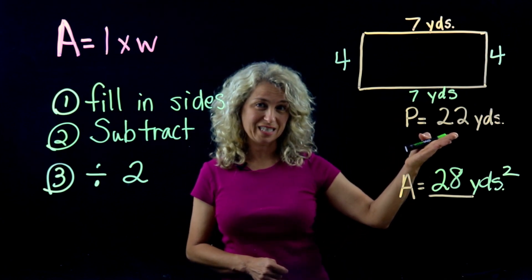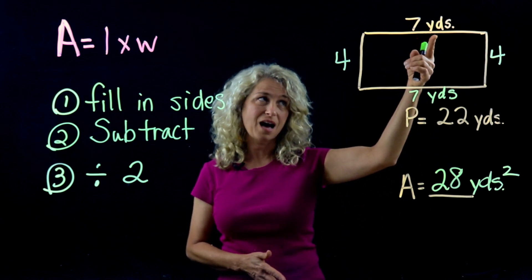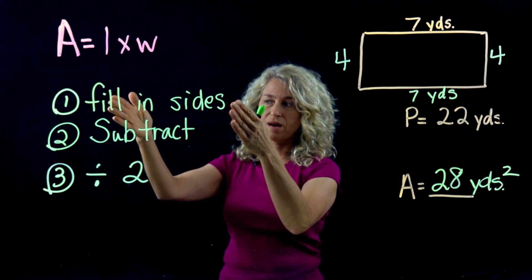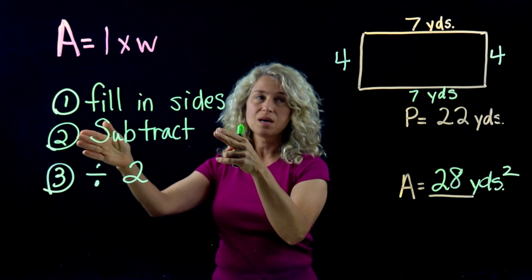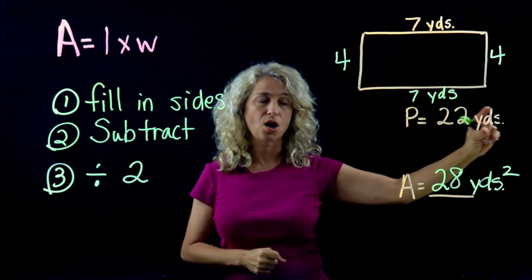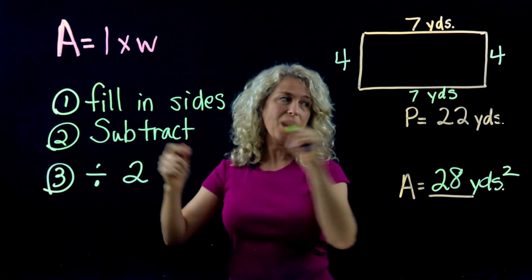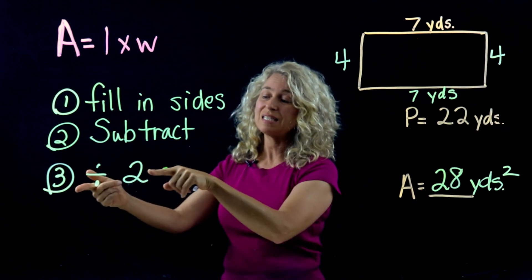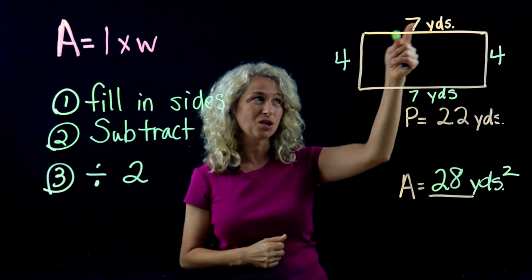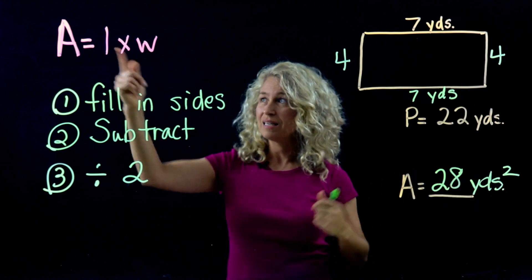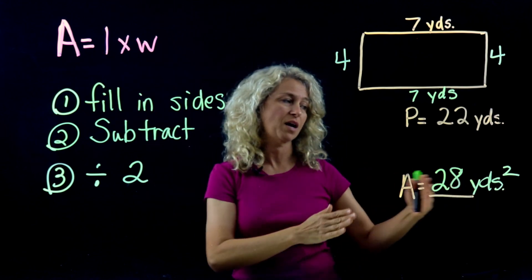And then step 3: divide and you'll get your missing side, and then you can just simply multiply length times width to find the area.